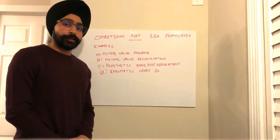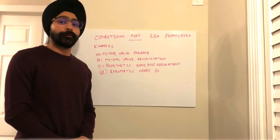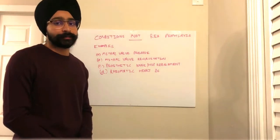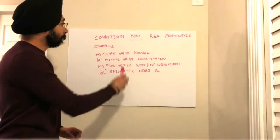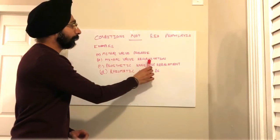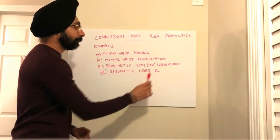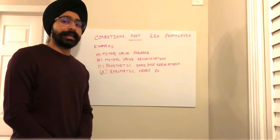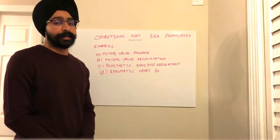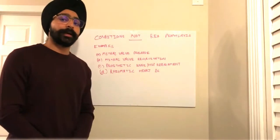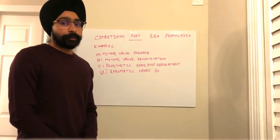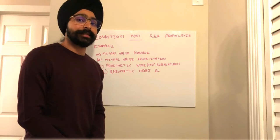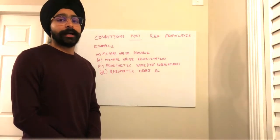There are certain cardiac conditions where we don't require antibiotic prophylaxis. Examples include mitral valve prolapse, mitral valve regurgitation, rheumatic heart disease, and prosthetic knee or hip replacement — which is a non-cardiac condition. With the revised AHA (American Heart Association) guidelines, these conditions don't require antibiotic prophylaxis. To keep things simple: any cardiac condition other than those previously discussed does not require antibiotic prophylaxis.